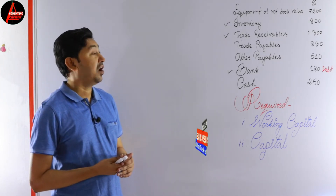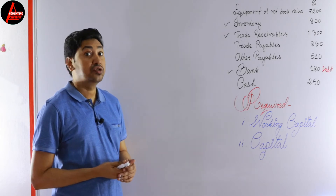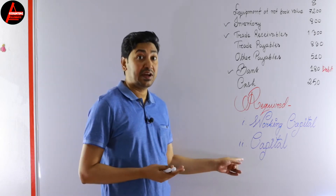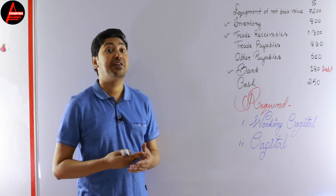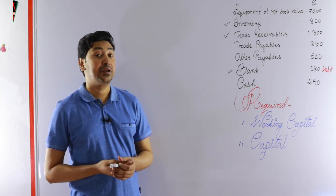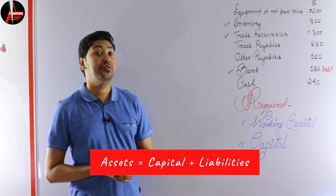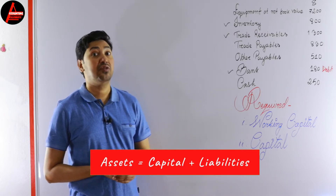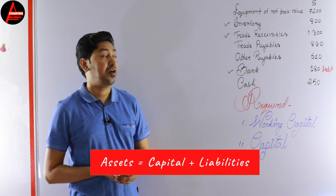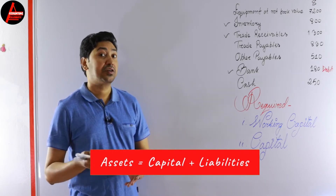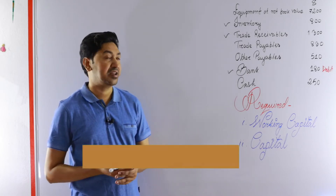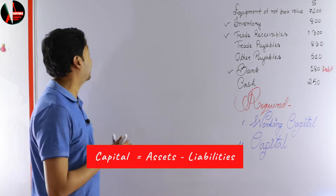There are two ways to calculate capital. The first way is: if you add all the non-current assets to working capital, you can calculate capital. The second way uses the accounting equation — Assets = Capital + Liabilities — so if you know your assets and your liabilities, you can easily calculate capital. Capital equals Assets minus Liabilities.